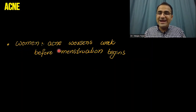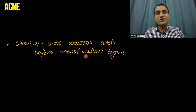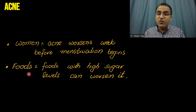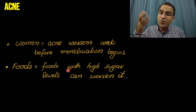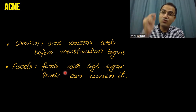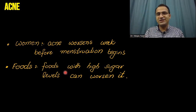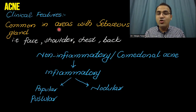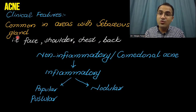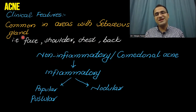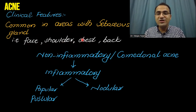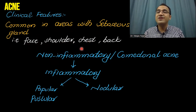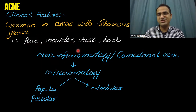In women, acne worsens the week before menstruation begins. Foods with higher glycemic load — with high glucose and high sugar — can worsen acne. Acne is more common in areas where there are more sebaceous glands, and it is more common in the face, shoulder, chest, and back.